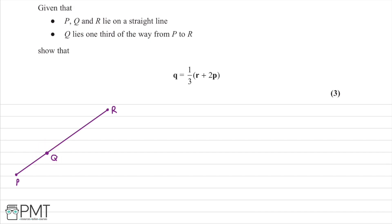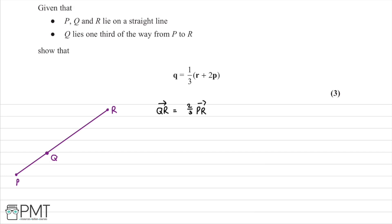We can say that the vector QR is going to be equal to two thirds of the vector PR, because Q lies one third of the way along from P, so QR covers the remaining two thirds. Using our knowledge of position vectors, the vector QR equals the position vector R minus the position vector Q, and that equals two thirds of the vector PR, which in terms of position vectors is R minus P.